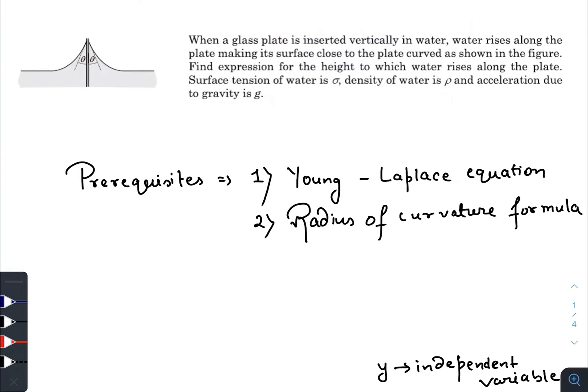Hey what is up everyone, I hope all of you are doing great. In today's question we have: when a glass plate is inserted vertically in water, water rises along the plate making its surface close to the plate curved as shown in the figure. Find the expression for the height to which water rises along the plate. Surface tension is given as sigma, density of water is rho, and acceleration due to gravity is g. And here you can see that the contact angle is theta.